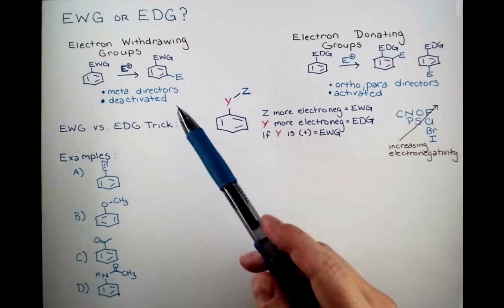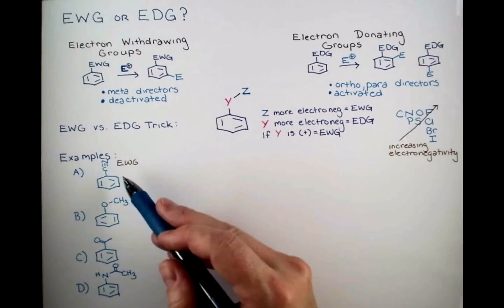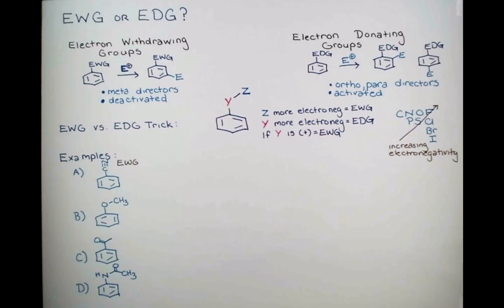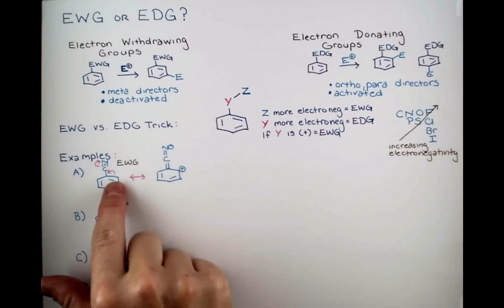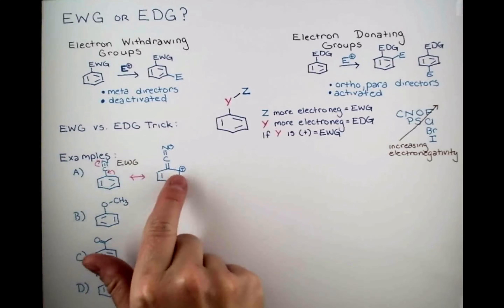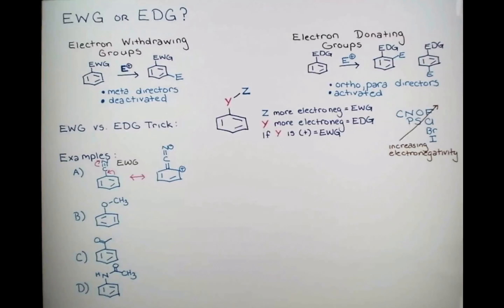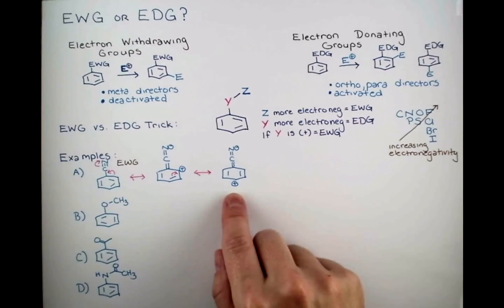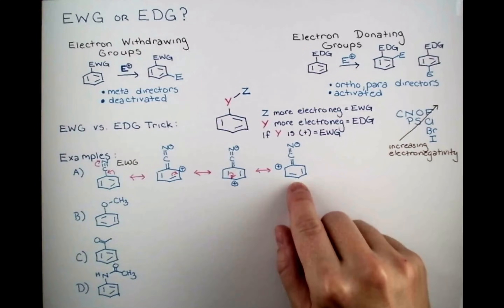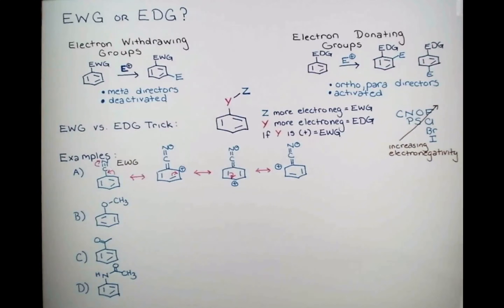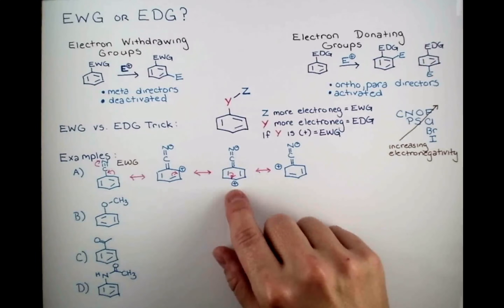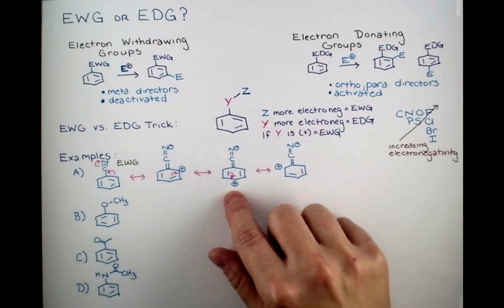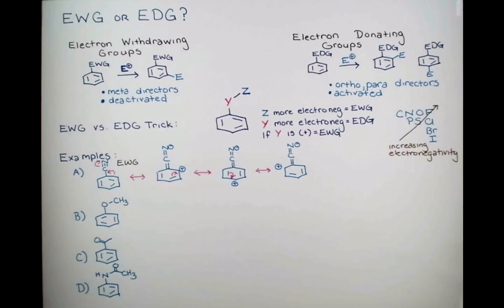The nitrile will be a meta director and deactivate the ring. We can also explain this with resonance. The nitrile is conjugated with the double bonds in the ring, so we can draw resonance forms that pull electron density out of the ring. We moved our electrons away from this carbon atom, so it gets a positive charge, and we pushed electrons up onto nitrogen, which stabilizes the negative charge. Continuing to push electrons around the ring, we get a positive charge at the para position, and we can draw a final resonance form where the positive charge is ortho. In EAS, one of the double bonds in benzene has to open up and attack an electrophile. Electrophiles are positive, and a positive charge doesn't want to interact with another positive charge, so the increased electropositivity of the ortho and para positions is why this is a meta director.